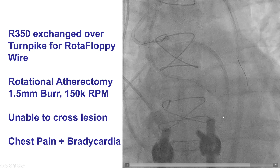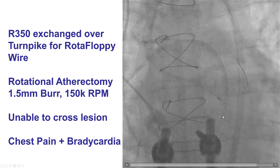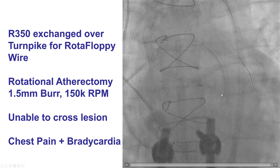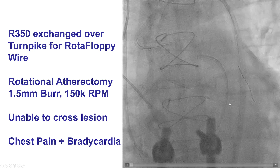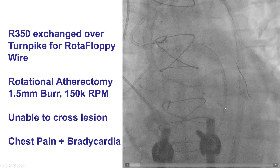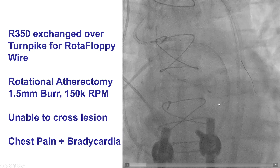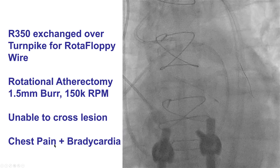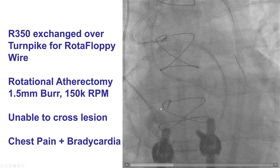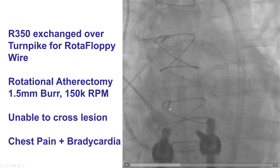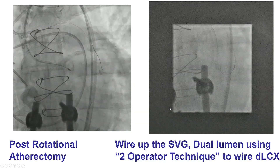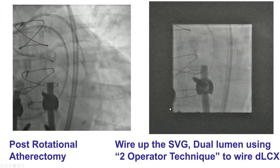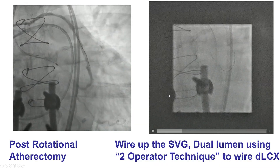We then did rotational atherectomy with a 1.5 mm burr at 15,000 RPMs. Although we were not able to actually cross the lesion, and the patient did develop transient bradycardia and chest pain — we did not use a temporary pacemaker — it did modify the lesion enough that we were then able to advance antegrade equipment.